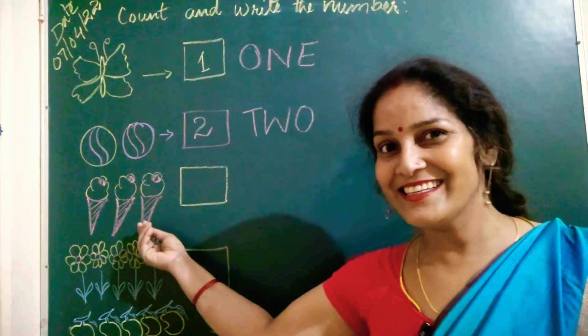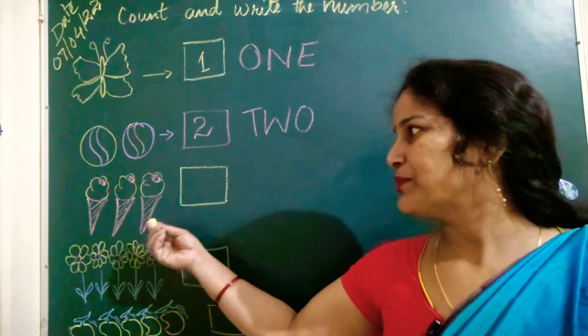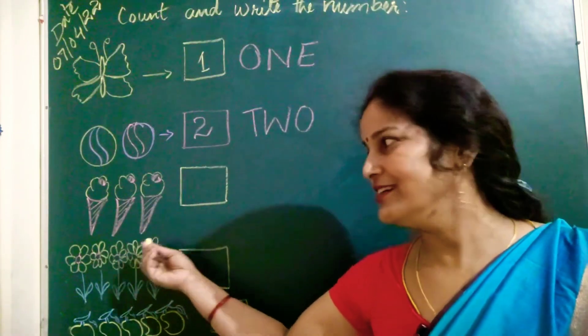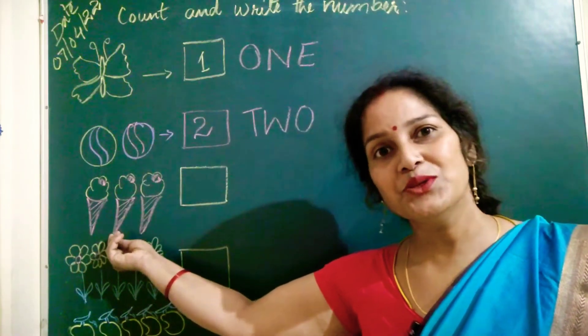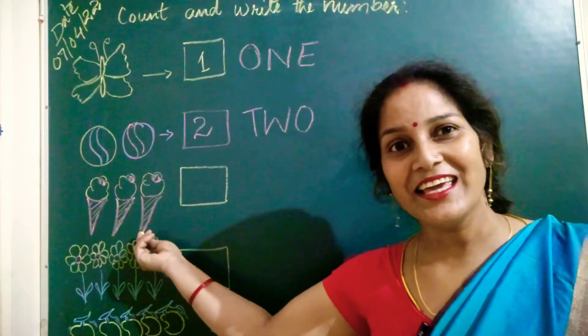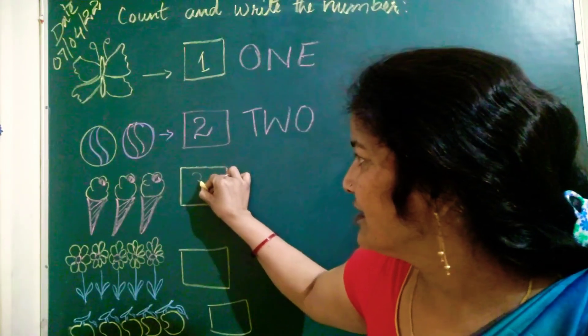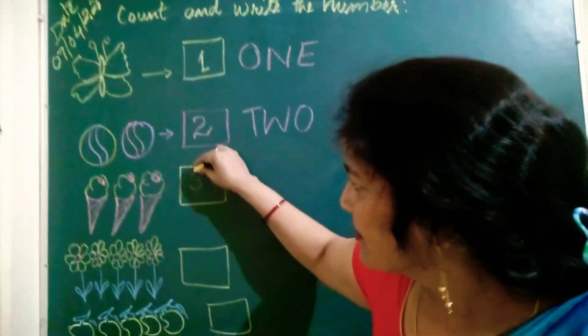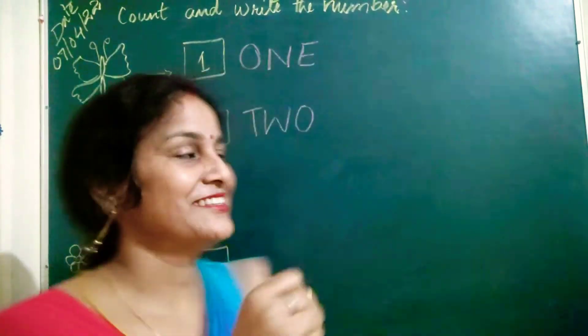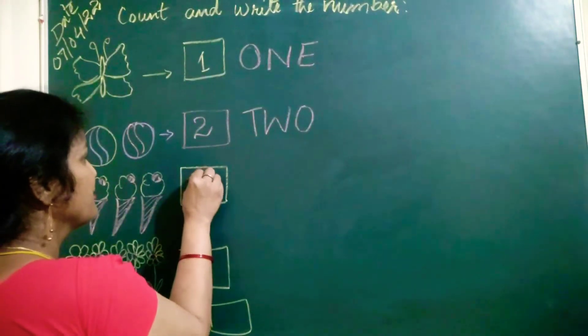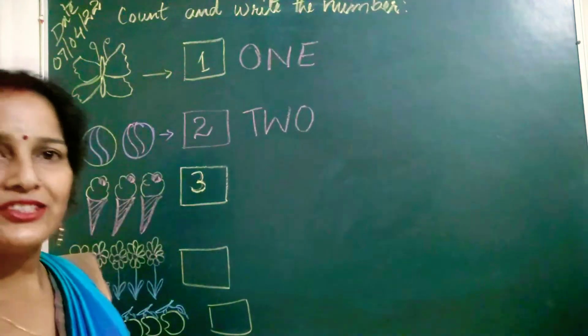What is this? Ice cream. So how many ice cream are here? One. Two. Three. Three. So three. So three. This one is three.